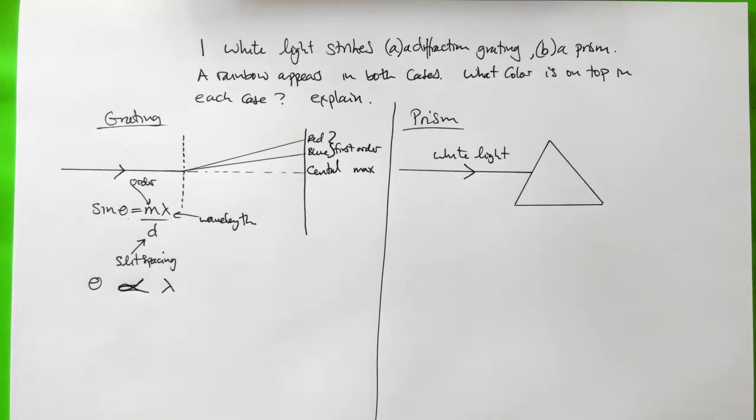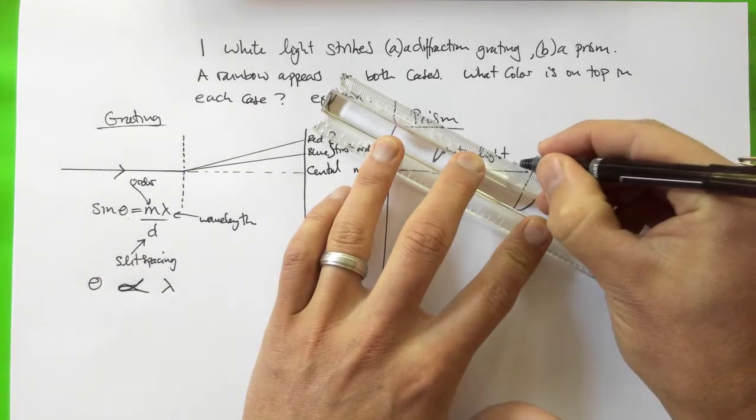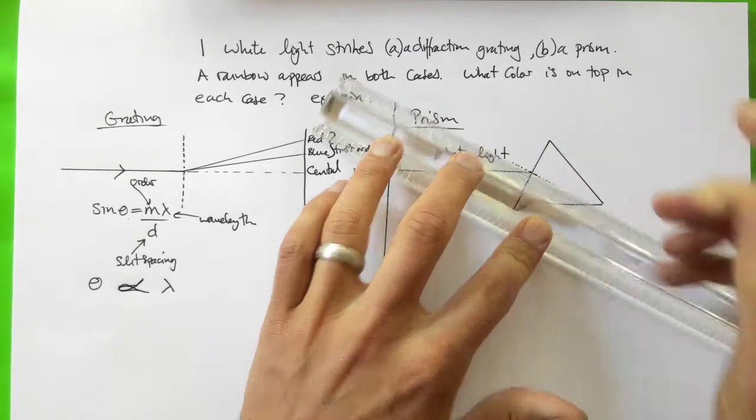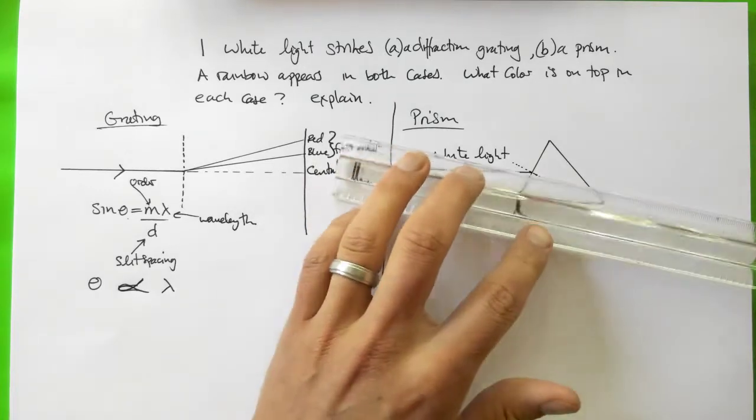So what is the normal? The normal we can just draw it in. So there's our normal at the point where the ray entered the surface. The ray does not go straight, instead it bends towards the normal.